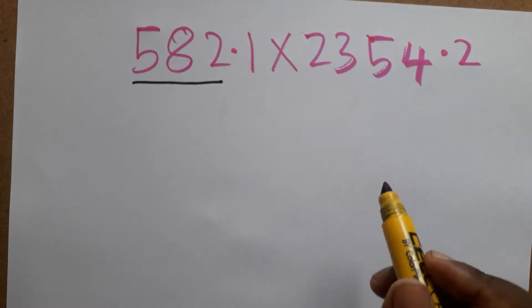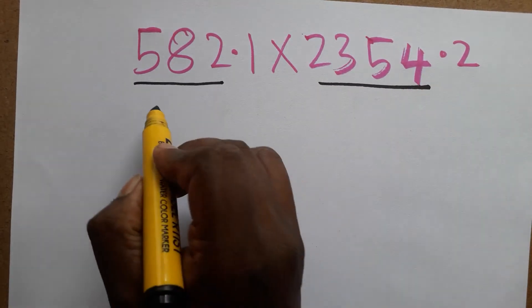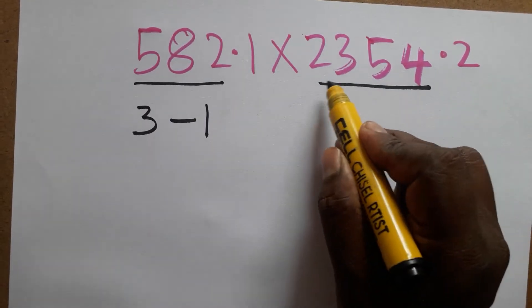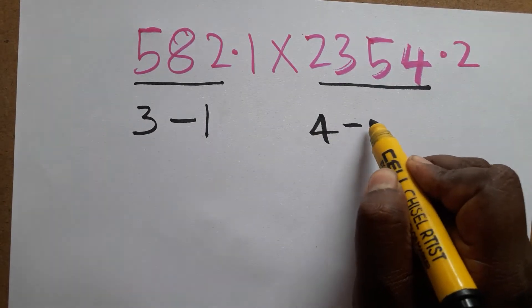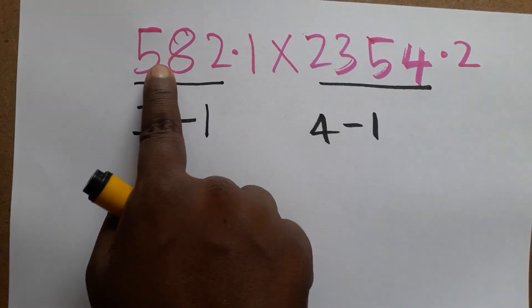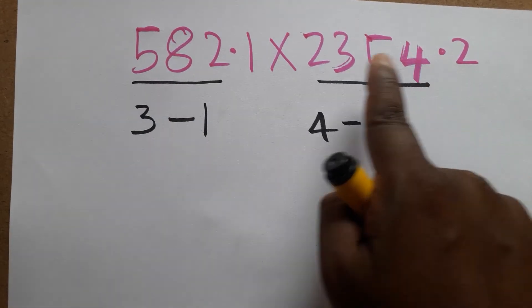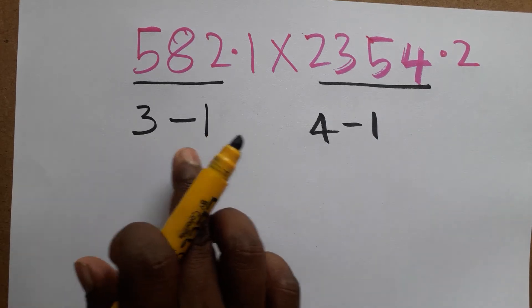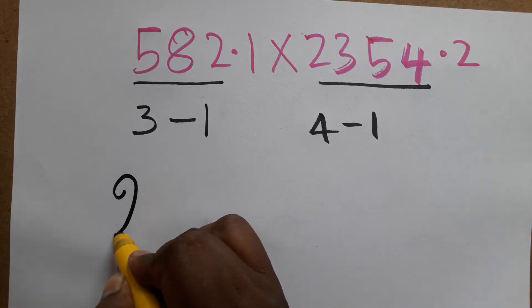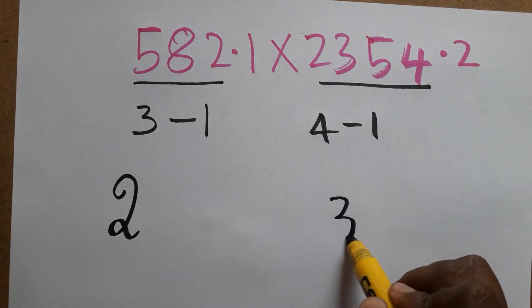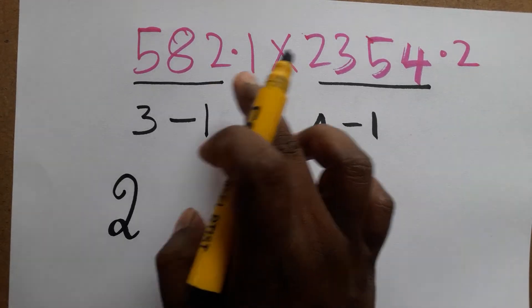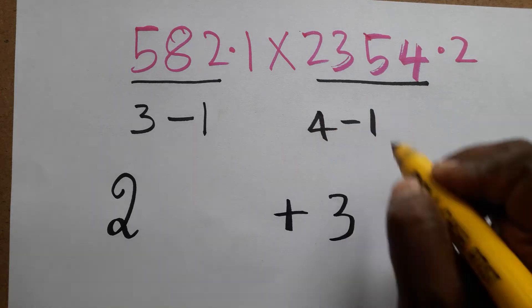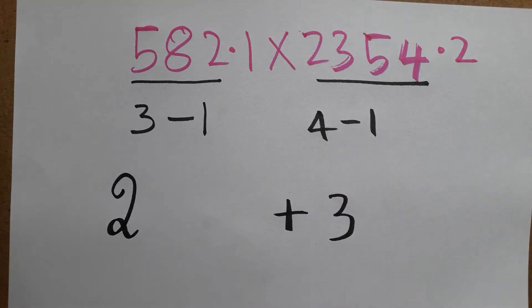Here we have three digits, so the characteristic is three minus one, which gives two. And here we have four digits, so four minus one gives three. In log, multiplication becomes addition — log of a product equals the sum of the logs.